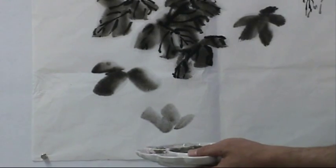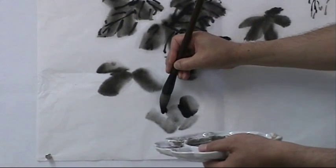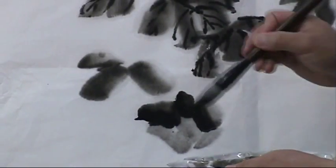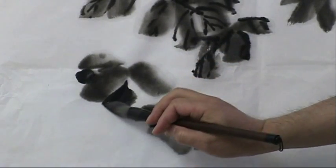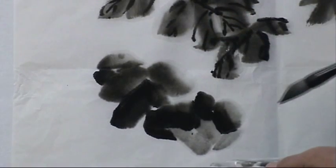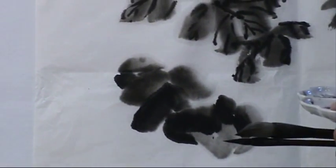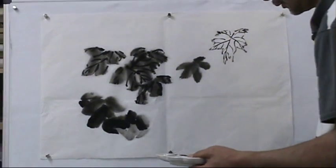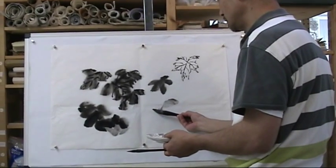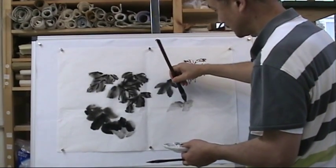Then I use darker ink to contrast with the light. So you can paint the upper side or the front side in darker tone and the back side in lighter tone to create the contrast. Varied the directions. So use light ink first.